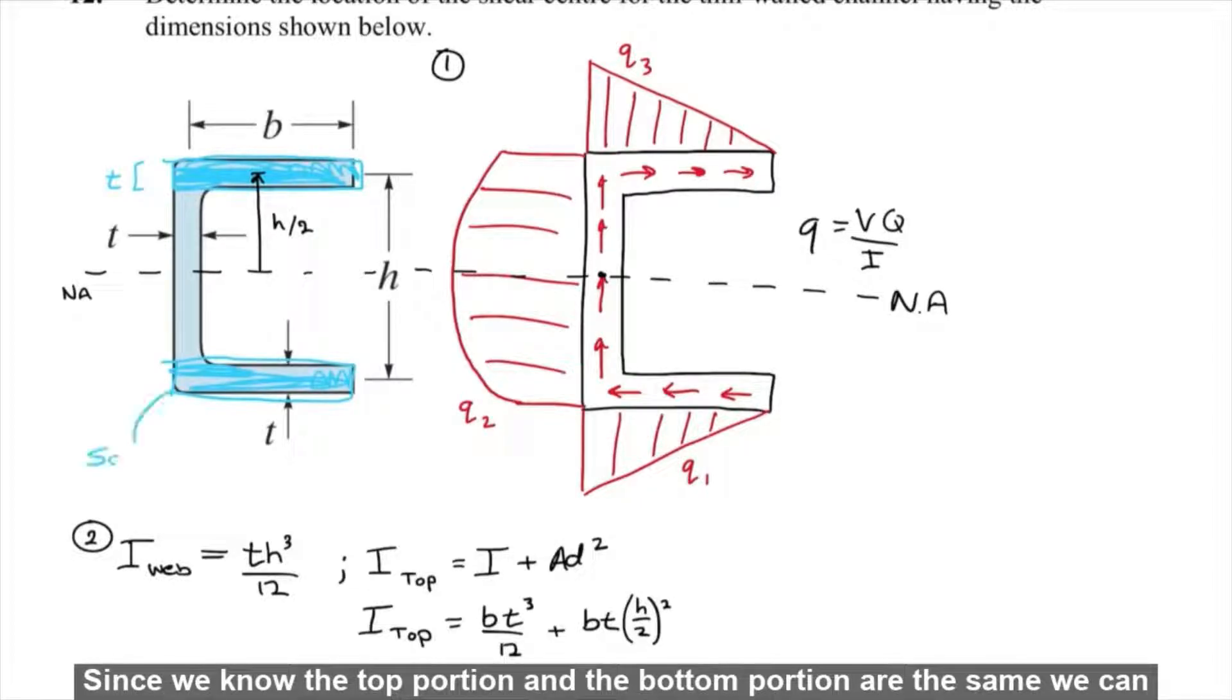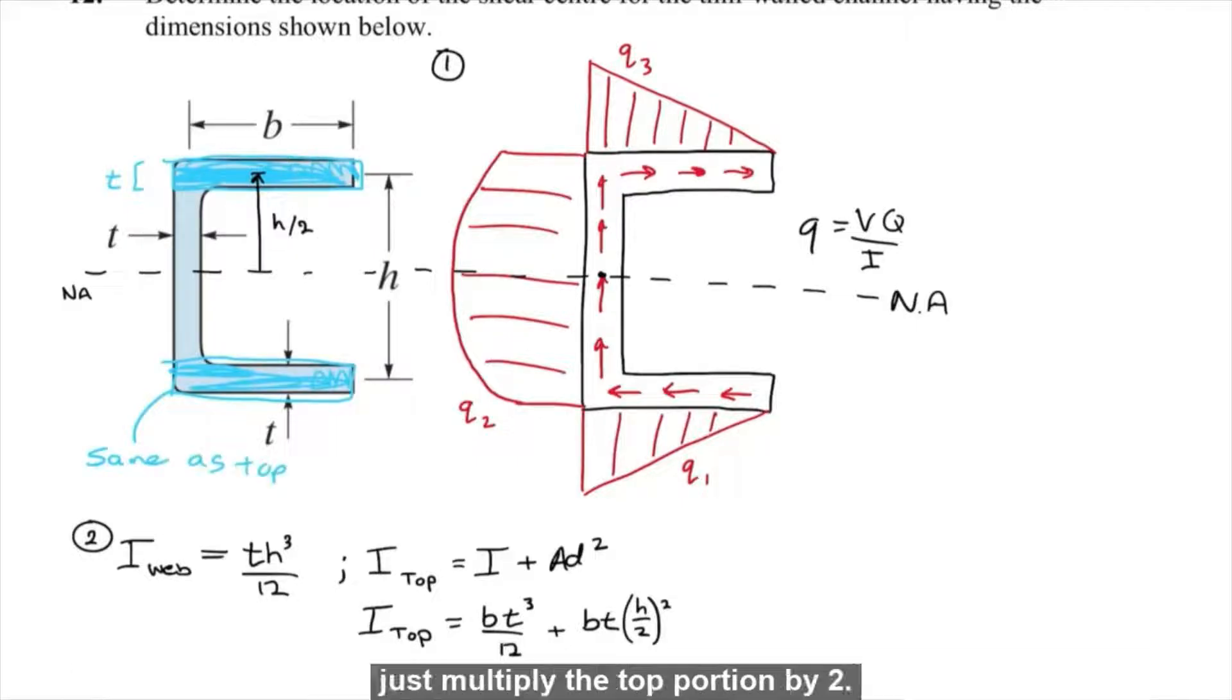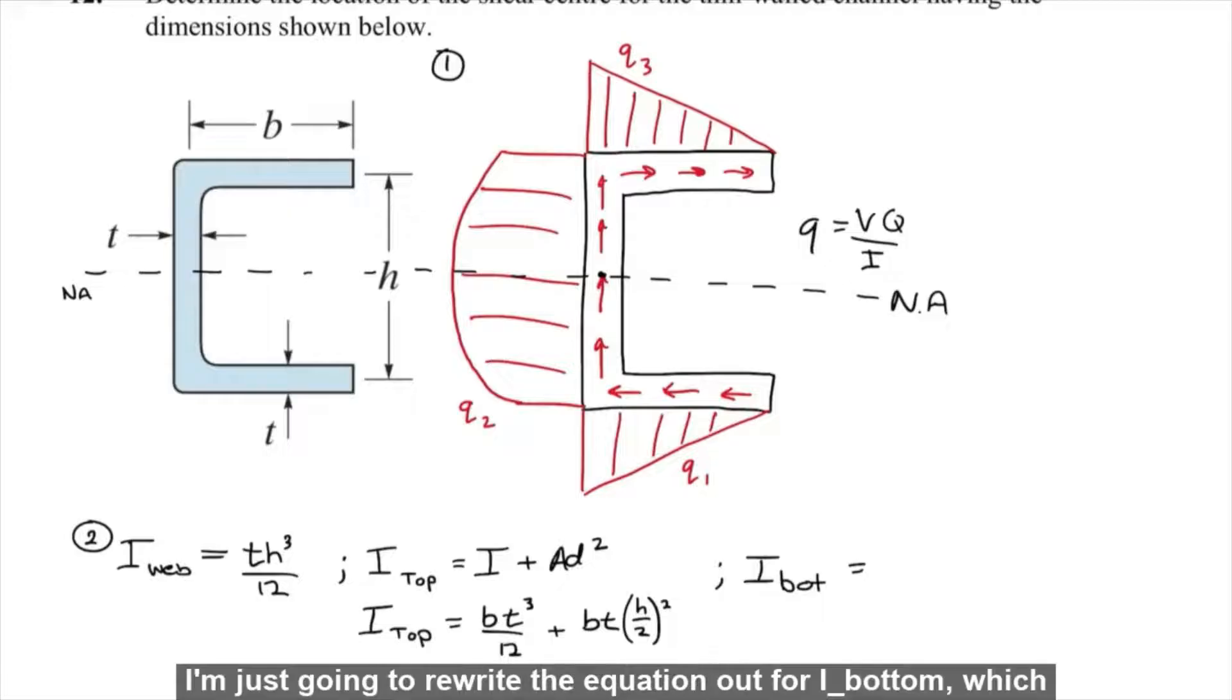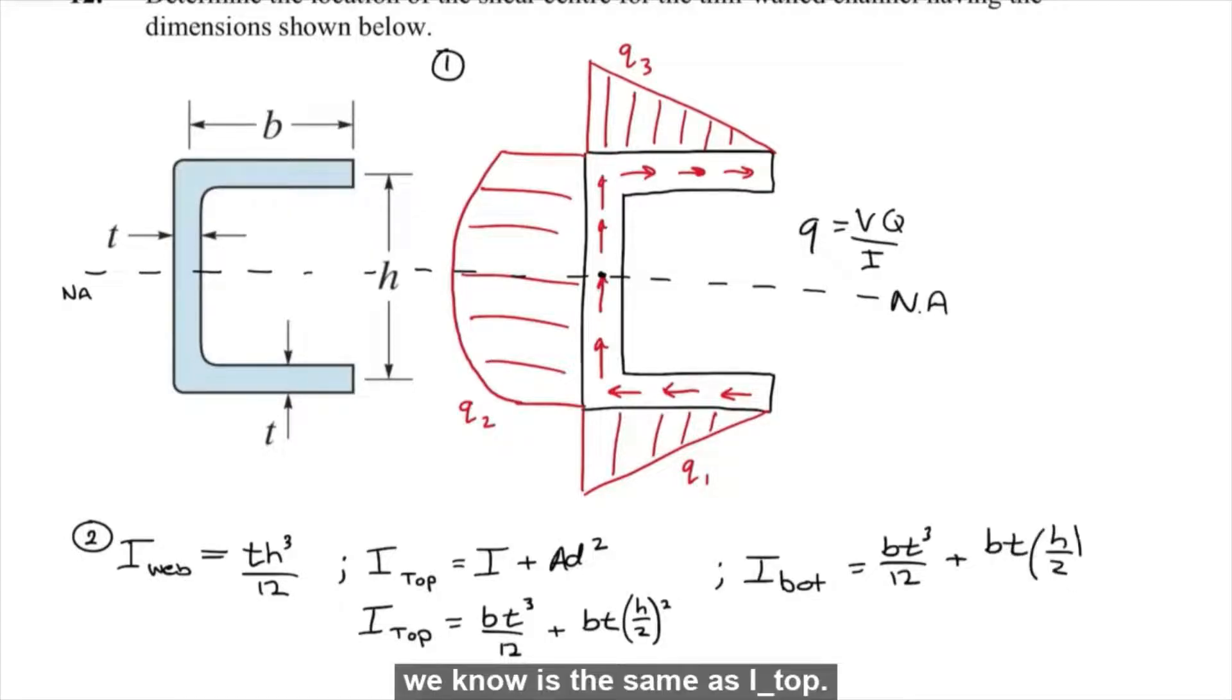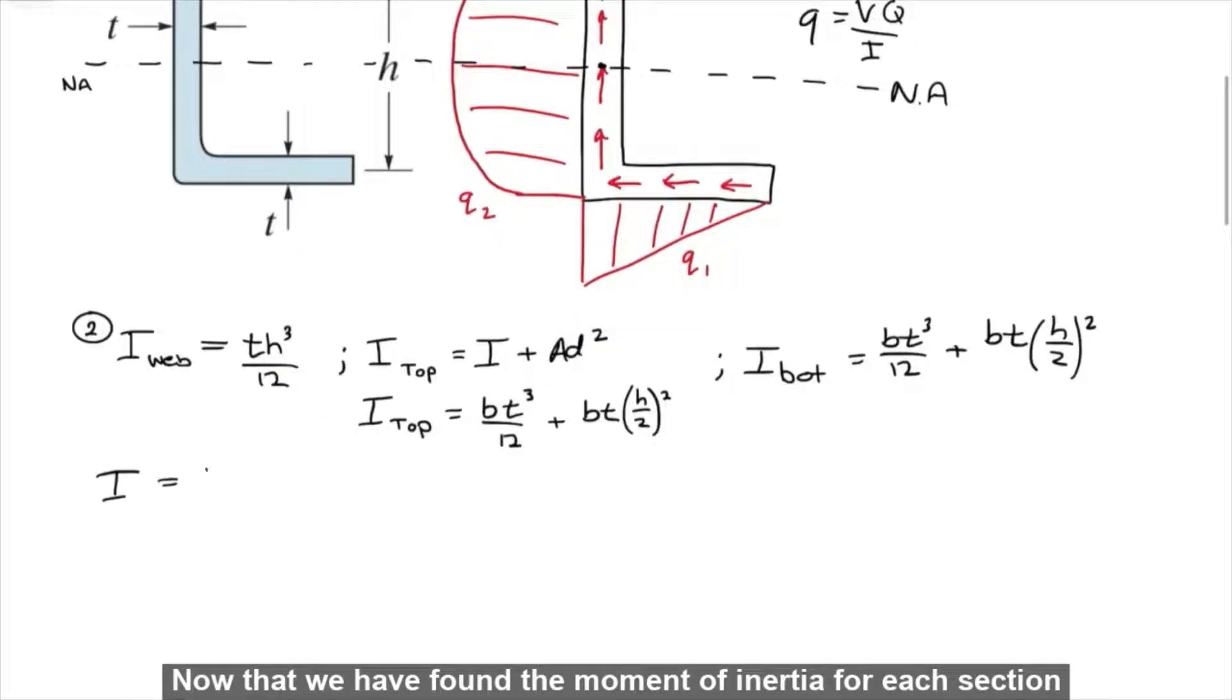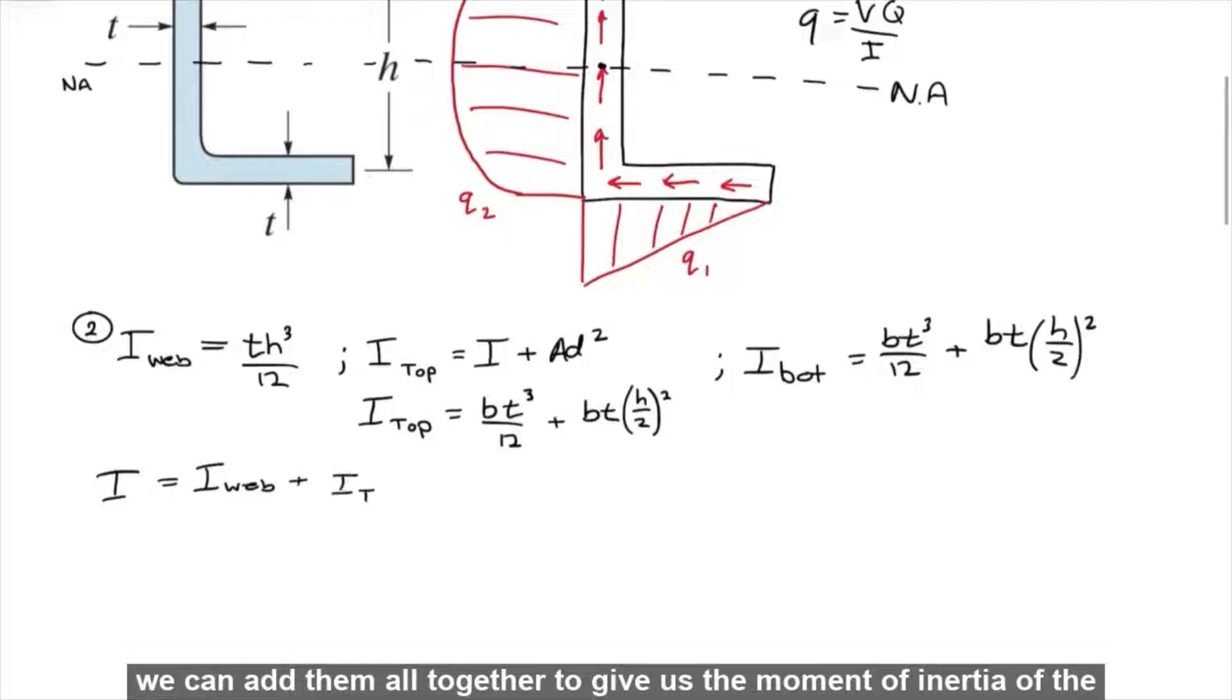Since we know the top portion and the bottom portion are the same, we can just multiply the top portion by 2. In this case, I'm just going to rewrite the equation out for I bottom, which we know is the same as I top. Now that we have found the moment of inertia for each section, we can add them all together to give us the moment of inertia of the entire shape.